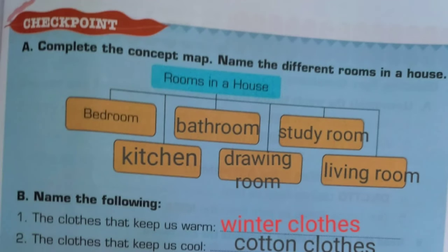Now here, we are proceeding to Checkpoint 1. A. Complete the concept map. Name the different rooms in the house. And the answer is: bedroom, bathroom, study room, kitchen, drawing room and living room. The clothes that keep us warm: winter clothes. The clothes that keep us cool: cotton clothes.